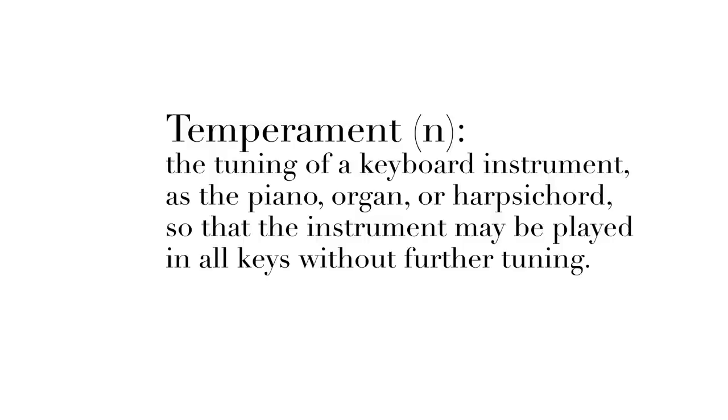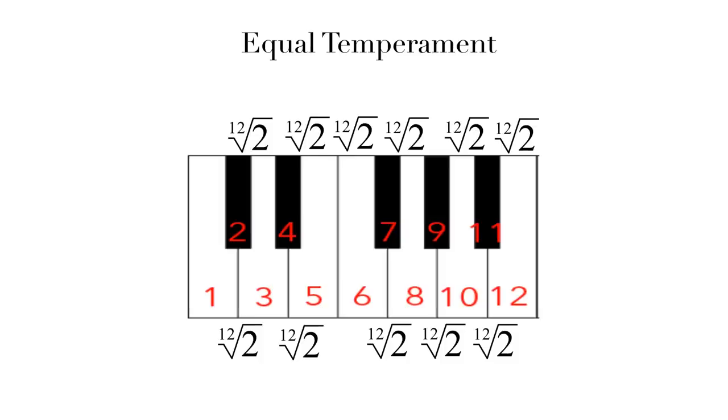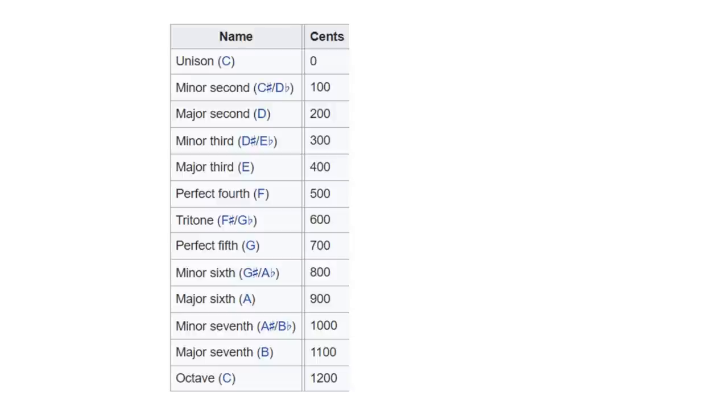Essentially what it does is it knocks everything out of tune so that everything can be in tune. Makes sense, right? Instead of using simplistic ratios, we use the 12th root of 2. But despite the complex math, it does what we want it to do. It makes all of the half steps equally distant, and it keeps the octaves mostly in tune.